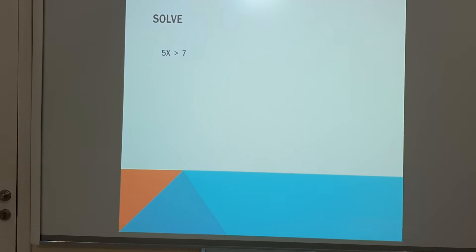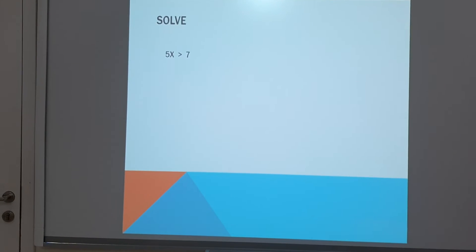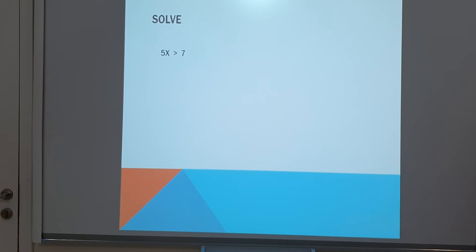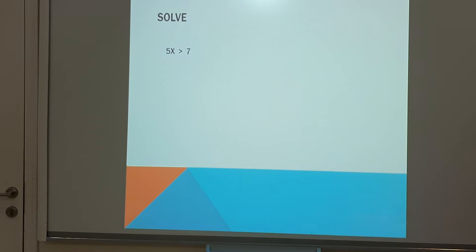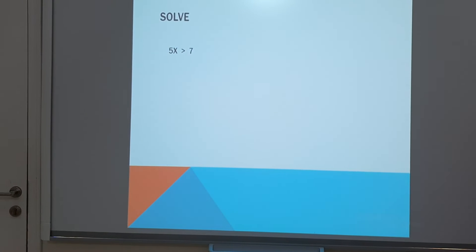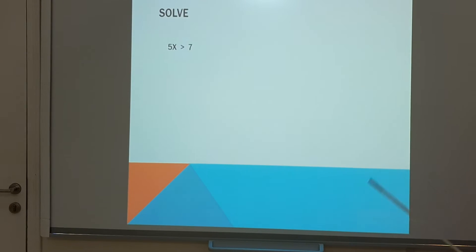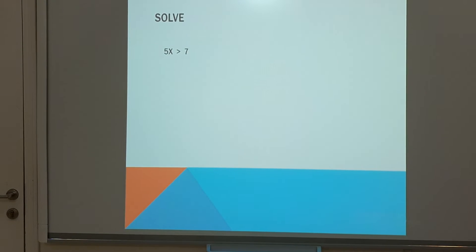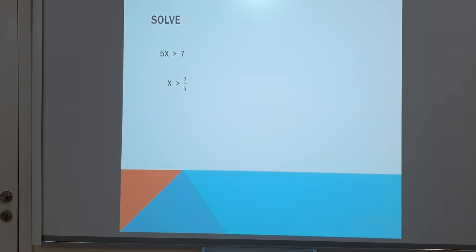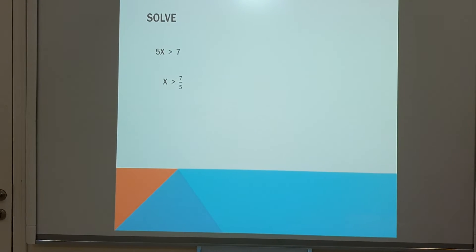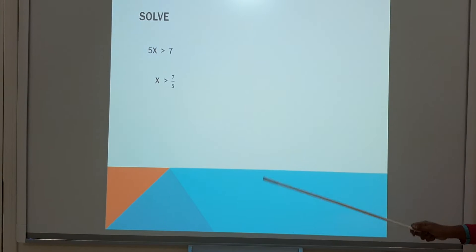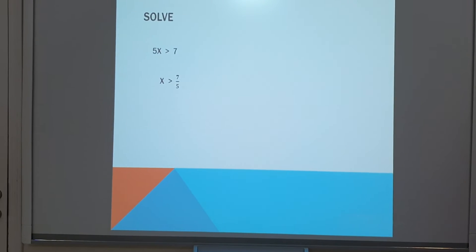Now solve some problems. First one is 5x is greater than 7. So how to find the value of x? It is 5 multiplied by x. When the number comes to the other side, it should be in division. So x is greater than 7 divided by 5. This is the value of x.